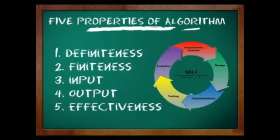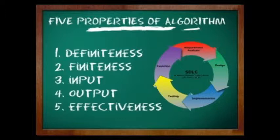Algorithm has five important properties. First is finiteness. Second is definiteness. Third, the input. Fourth, the output. And the fifth is the effectiveness.